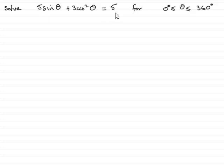How are we going to solve an equation like this? What I notice is that this trig equation is in different trig functions. We've got a sine theta here and we've got a cosine function here, cos squared theta.